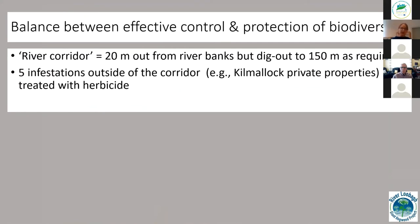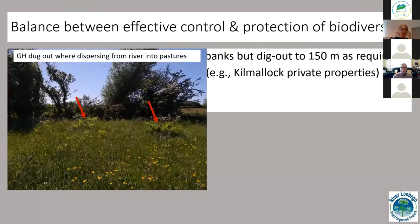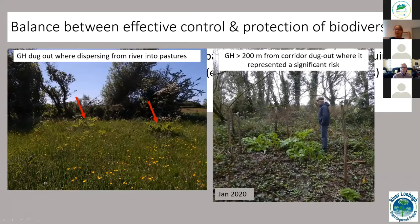We had a small budget and needed to balance being effective in control methods and protecting biodiversity. We regarded the river corridor as about 20 metres out from the river bank on both sides, but dug out to 150 to 200 metres as required. There were five infestations outside the corridor — private properties in Kilmallock and elsewhere — where we treated with herbicide because we didn't have the budget, time, or labour to dig those areas out.